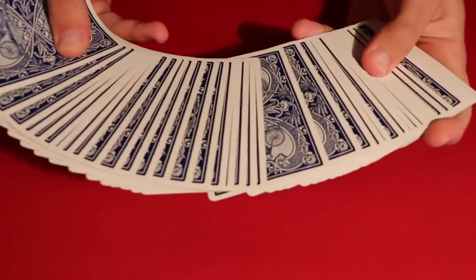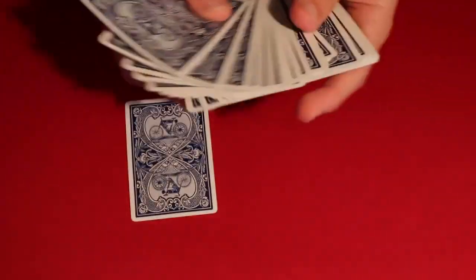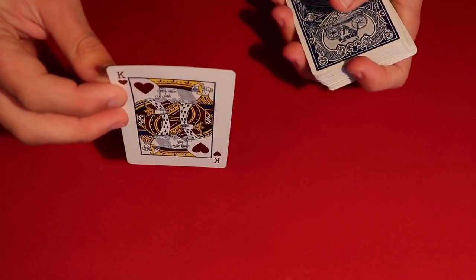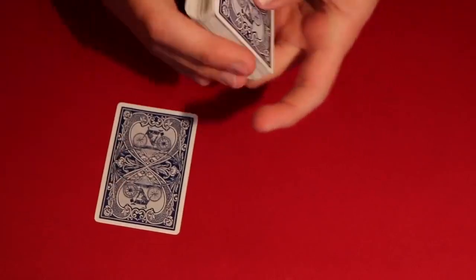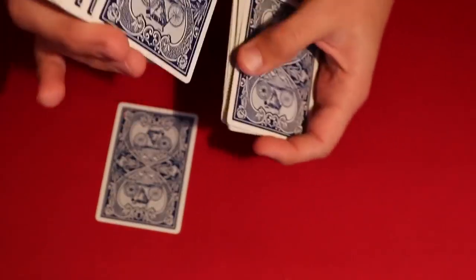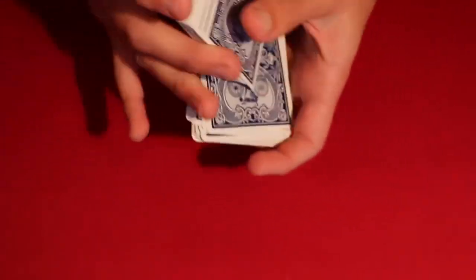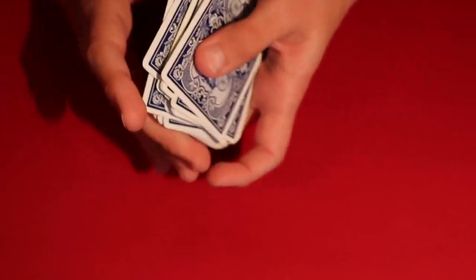All right, so here's how you would start off the trick. You go ahead and have the spectator pick any card they want to. Let's say in this case this is going to be your card for the trick, and you would just tell me when to stop whenever you want. So let's say you just said stop right around here. You go ahead, you put the spectator's card in the middle of the deck, and then you keep shuffling up the deck as well.